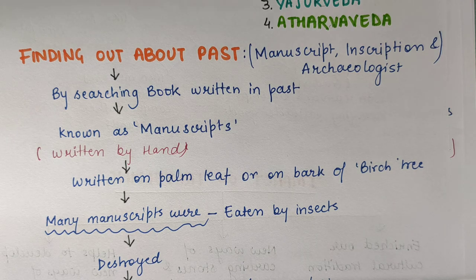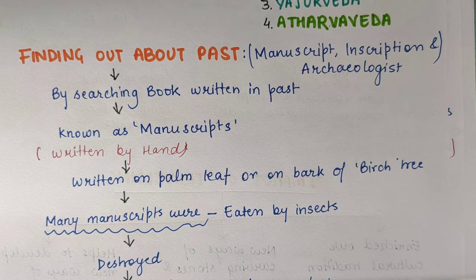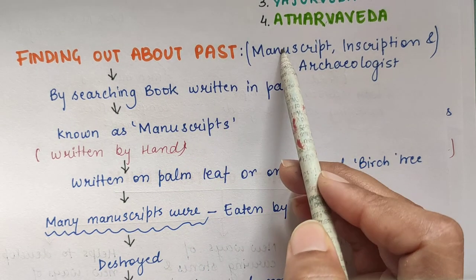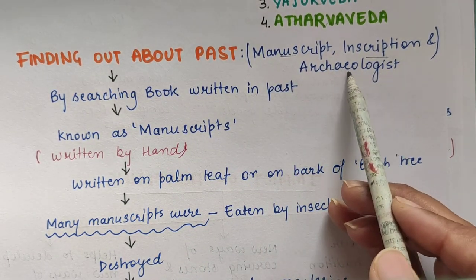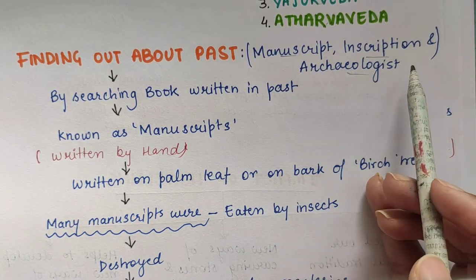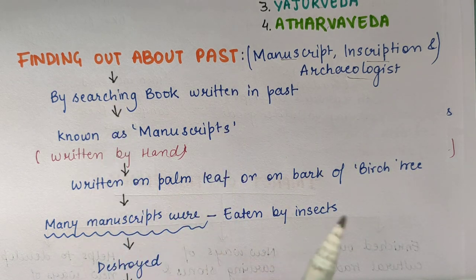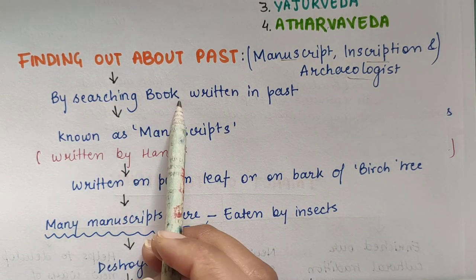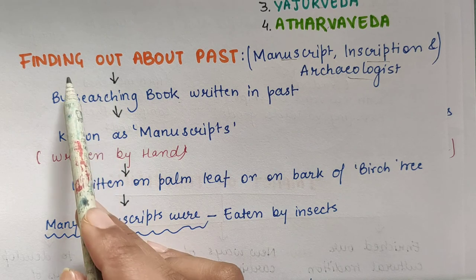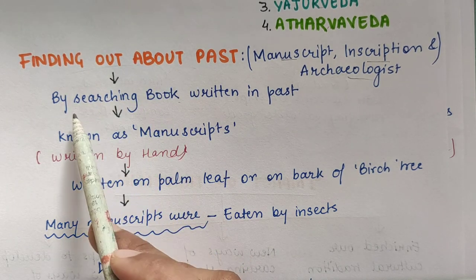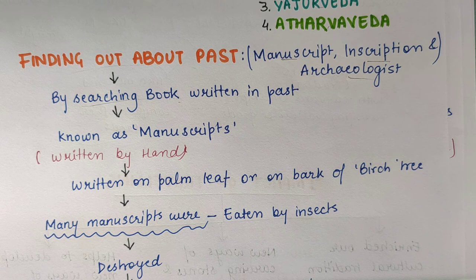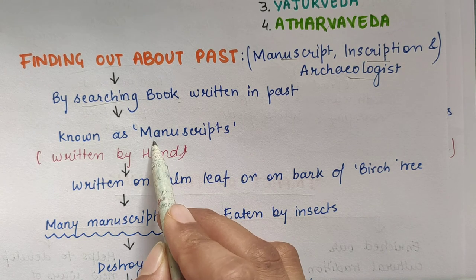Now, finding about the past — how do we come to know about the past? Hamein kaise pata chala ki log kaise rahte hain? We came to know by a few things like manuscripts, inscriptions and through archaeologists. What is a manuscript? By searching books written in the past — jo purane zamane mein books likhe gaye the, unse humne knowledge nikali. Aur us zamane ki books ko bolte the manuscript — aur ye haath se likhi jaati thi, written by hand.